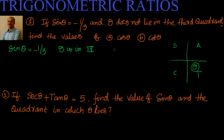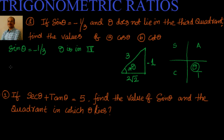Now we have to find cos theta and cot theta. I'll use a right angle triangle. Since sine theta equals minus 1 by 3, the opposite side is 1 and the hypotenuse is 3. The adjacent side is the square root of 9 minus 1, which is root 8, or 2 root 2. So cos theta equals adjacent over hypotenuse, that is 2 root 2 by 3.